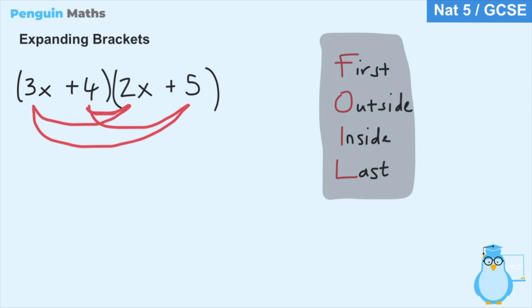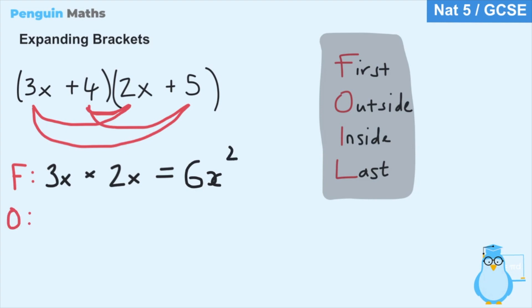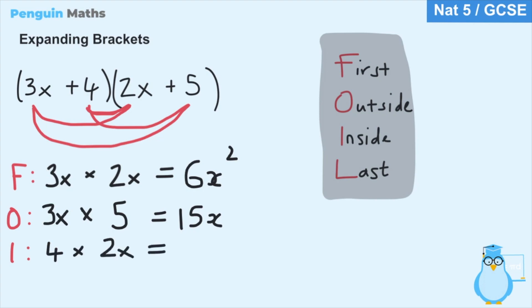Beginning with the first terms, we have 3x multiplied by 2x. Multiplying 3 times 2 gives us 6, and x times x gives us x squared, so the first terms give us 6x squared. For the outside terms we have 3x multiplied by 5 — that's 3 times 5 which is 15, and we keep the x, so we get 15x. For the inside terms we have 4 and 2x — 4 times 2 is 8, so we get 8x.